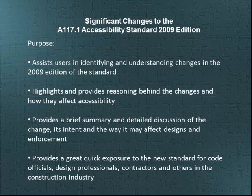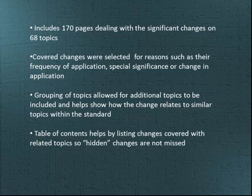This book provides the reader with a brief summary and detailed discussions of the changes. The text provides commentary and analysis, including some of the reasons behind the change and how it affects the application of the requirement. The Significant Changes book provides 170 pages of material addressing changes for 68 topics. The changes addressed in the book were selected based on items such as their frequency of application, special significance, or the way it will impact the application of the standard.